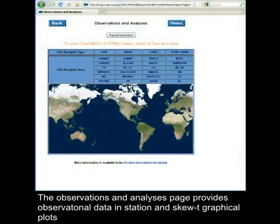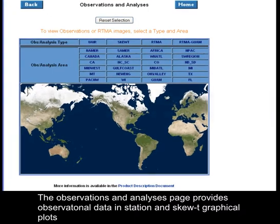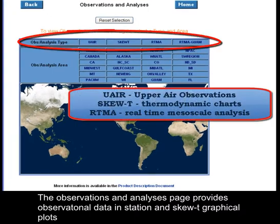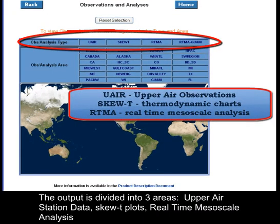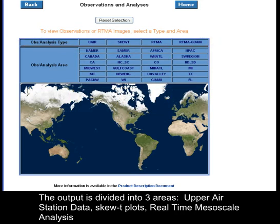The Observations and Analyses page provides observational data in station and SKU-T graphical plots. The output is divided into three areas: upper air station data, SKU-T plots, and real-time mesoscale analysis.